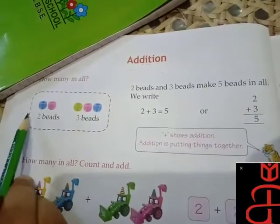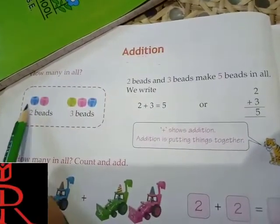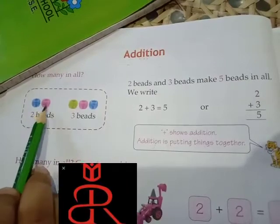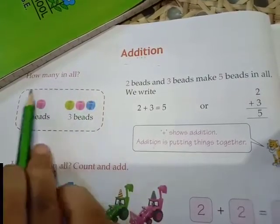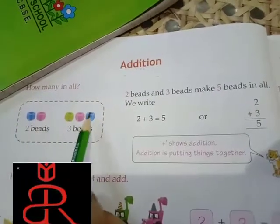Here we are having beads. There are two beads, one and two. And here we have three beads, one, two, three. Now if we have to add these all, how we will do?